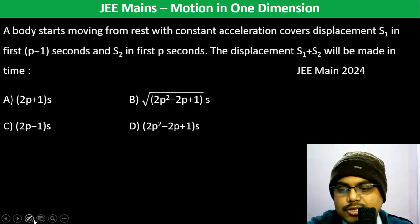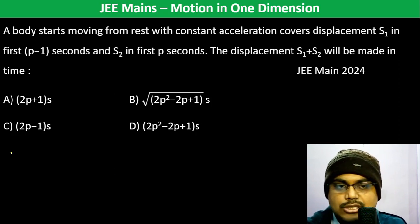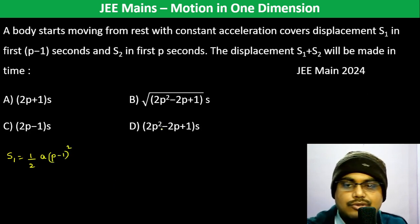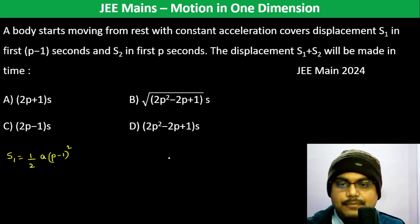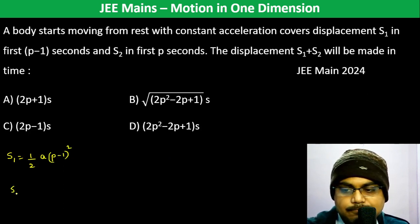A body starts moving from rest with constant acceleration and covers displacement s1 in the first (p−1) seconds. s1 is equal to half a times (p−1) squared, using s = ½at² with initial velocity zero. It also covers displacement s2 in the first p seconds, where s2 = ½ap².